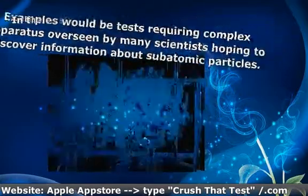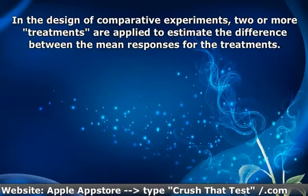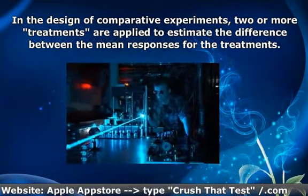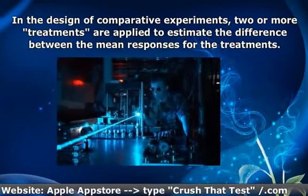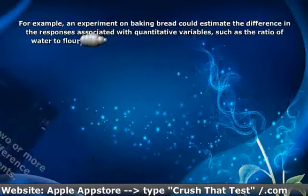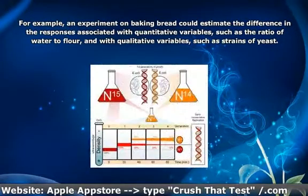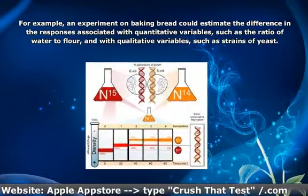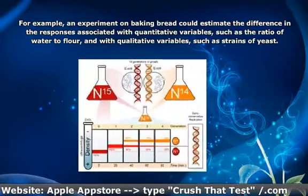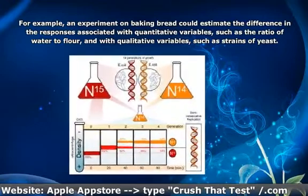In the design of comparative experiments, two or more treatments are applied to estimate the difference between the mean responses for the treatments. For example, an experiment on baking bread could estimate the difference in the responses associated with quantitative variables, such as the ratio of water to flour, and with qualitative variables, such as strains of yeast.